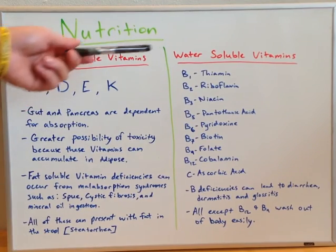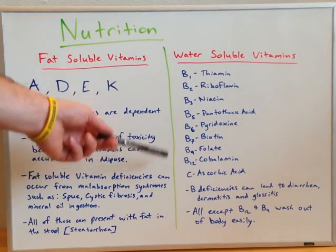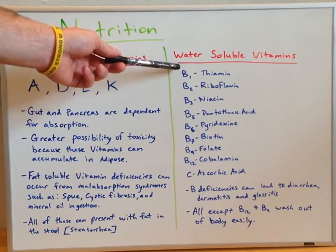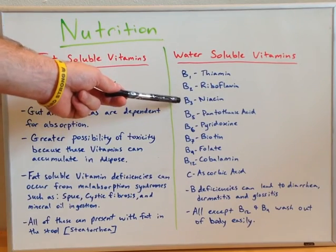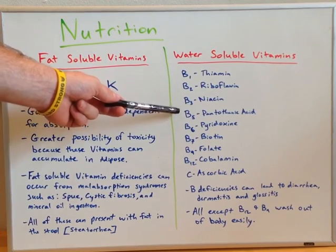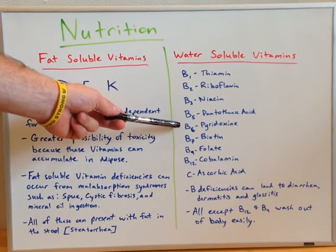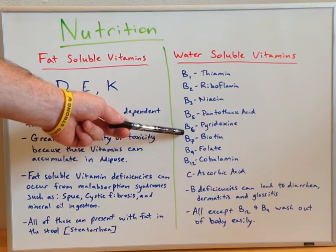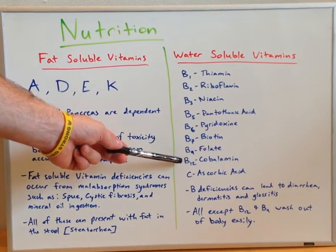Moving on to water-soluble vitamins, we have a list here. We have B1 thiamine, B2 riboflavin, B3 niacin, B5 pantothenic acid, B6 pyridoxine, B7 biotin, B9 folate, and B12 cobalamin.